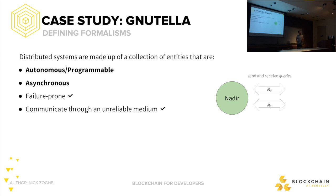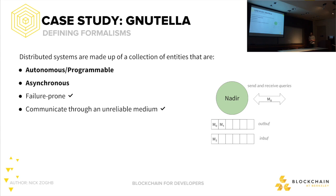The problem is that things don't happen sequentially in a distributed system — things happen asynchronously. When I'm handling sending a message and another message is coming my way, I can't really handle the incoming message. If two messages arrive at the same time, that's an issue. The solution: I have an inflow and an outflow — two buffers that store packets until I can either send them out or bring them in.